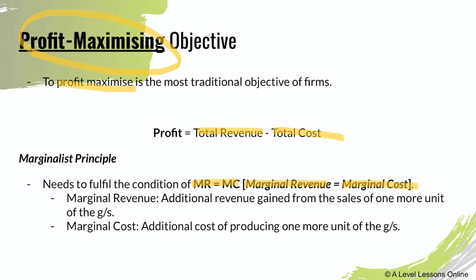In order for any firm to actually maximize profits, it must produce where marginal revenue — the additional revenue from the sale of one more unit of a good — equals marginal cost, the additional cost of producing one more unit. When additional revenue equals additional cost, that is where you are profit maximizing.